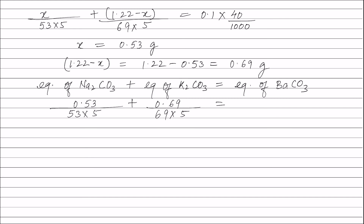Equivalents of barium carbonate equals weight of barium carbonate divided by equivalent weight of barium carbonate. The equivalent weight of barium carbonate is its molecular weight (197) divided by its valency factor (2). Solving this equation, the weight of the barium carbonate precipitate formed is 0.394 grams.